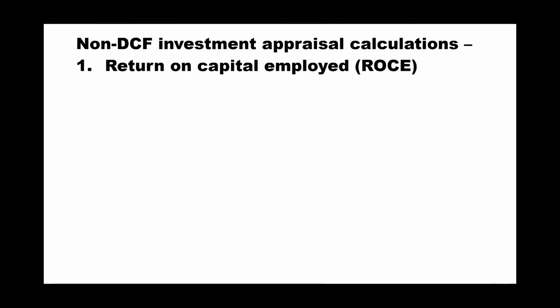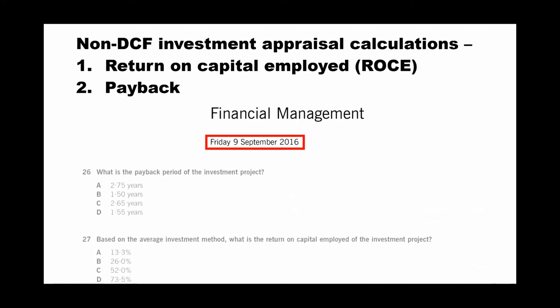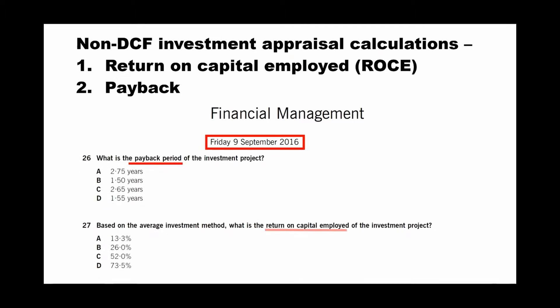The first thing is the non-discounted cash flow investment appraisal calculations, including return on capital employed (ROCE) and payback period. From past papers — specifically September 2016, Section B, questions 26 and 27 — Question 26 asks you to calculate the payback period of the investment project, and Question 27 asks for the return on capital employed.